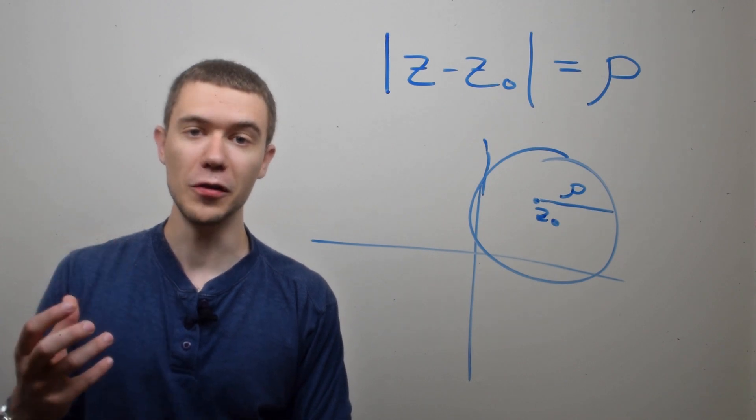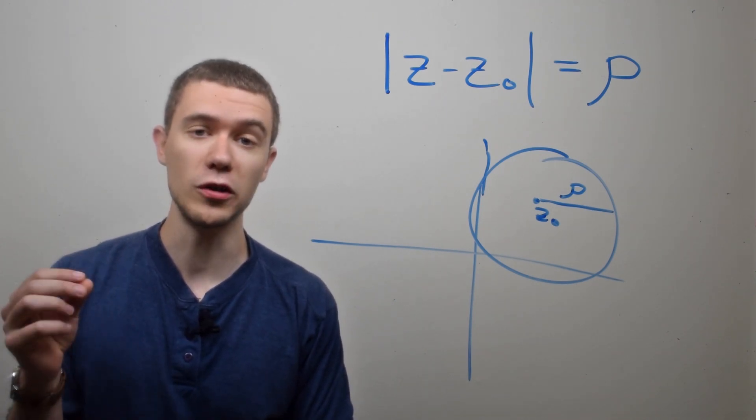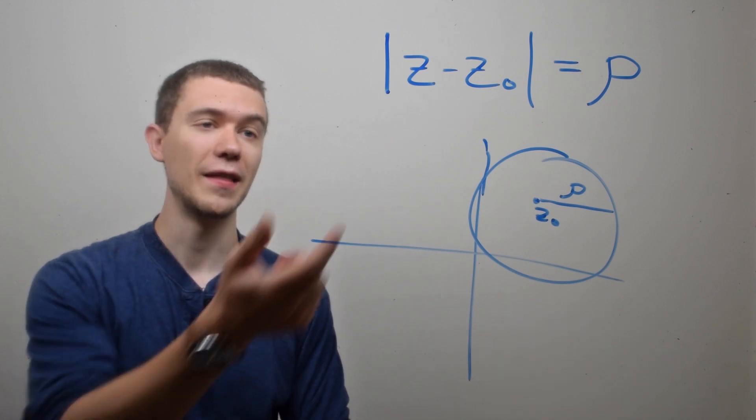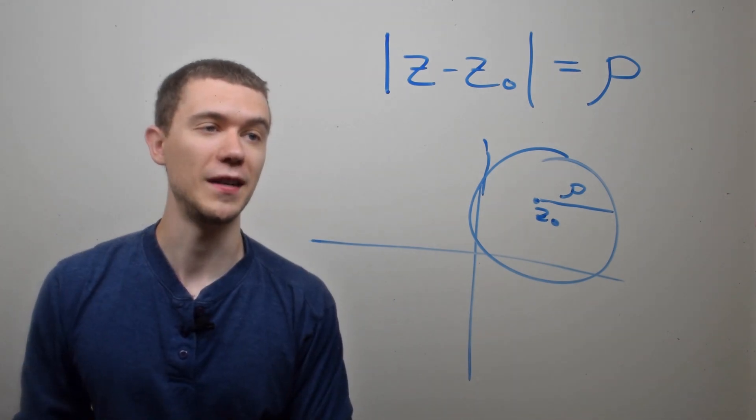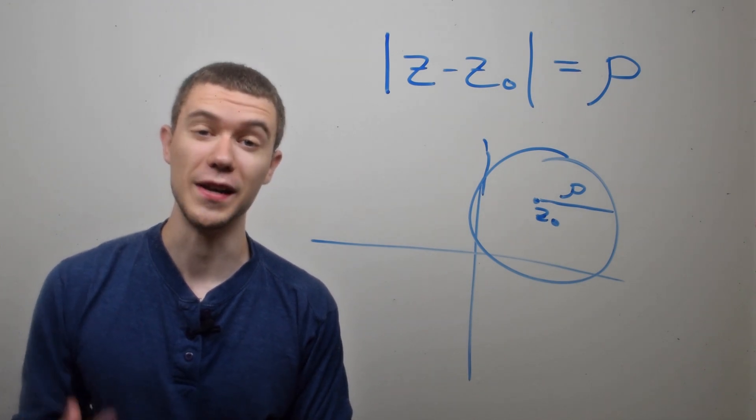One set of points you may be very familiar with are circles. And in the complex plane, an equation of a circle is given by the modulus of z minus z-naught equals rho, where the circle is centered at z-naught and has radius rho.